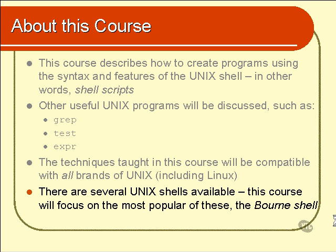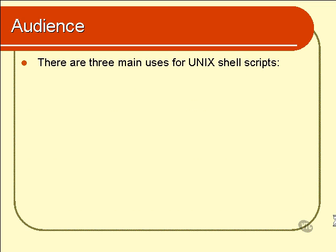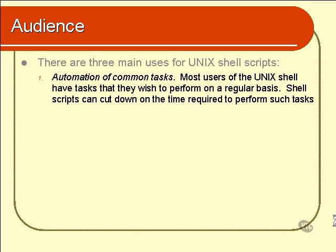We will discuss the various varieties of shells available a little later in this chapter, but now a quick word on whom this course is for. There are three main uses for Unix shell scripts. The first is automation — automating common tasks that you perform. If you are a regular user of the Unix shell, you will undoubtedly have a collection of tasks that you need to perform on a regular basis. If you are a competent creator of Unix shell scripts, you can dramatically cut down on the time it takes, creating a script that does it for you automatically.